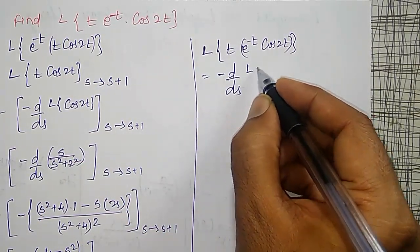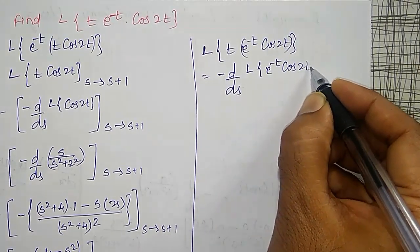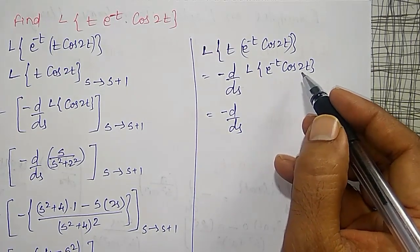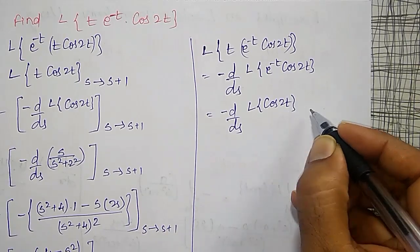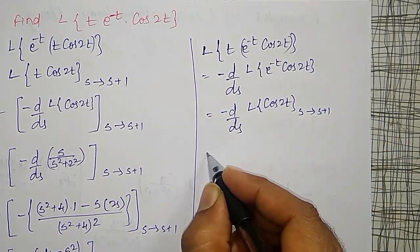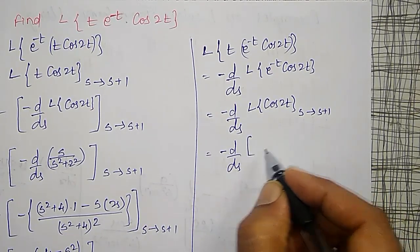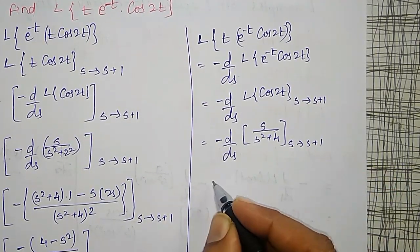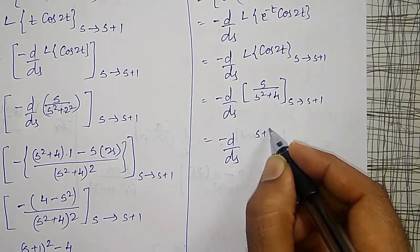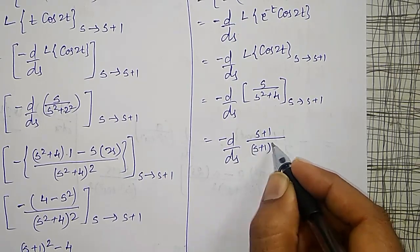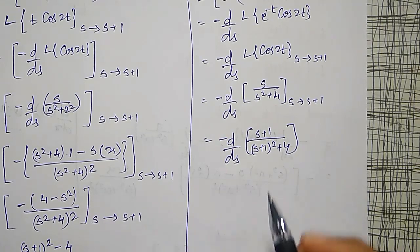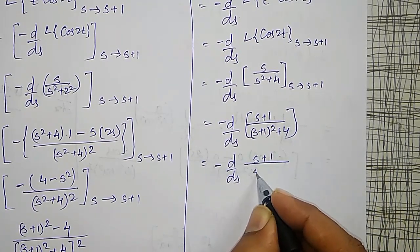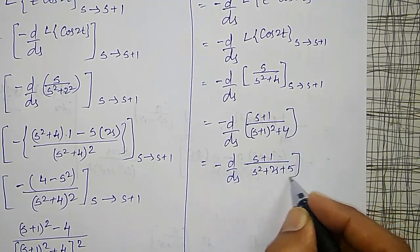Therefore: minus d by ds of s plus 1 divided by s plus 1 whole squared plus 4. Before differentiating, simplify the denominator. So: minus d by ds of s plus 1 divided by s squared plus 2s plus 5. Applying the u by v rule to differentiate.